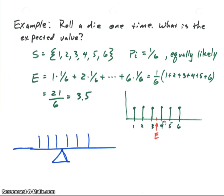Let's take a look at some examples. Again, we're going to start with a really simple example. We're going to roll a die one time. What is the expected value? So our sample space is finite, and so it just is from our integers 1 to 6. And in this case, they're all equally likely, so they all have the probability of 1/6.